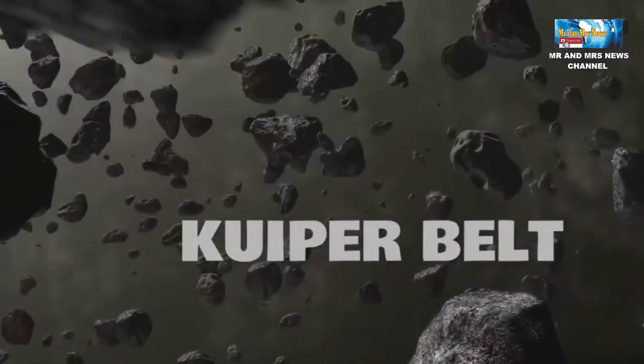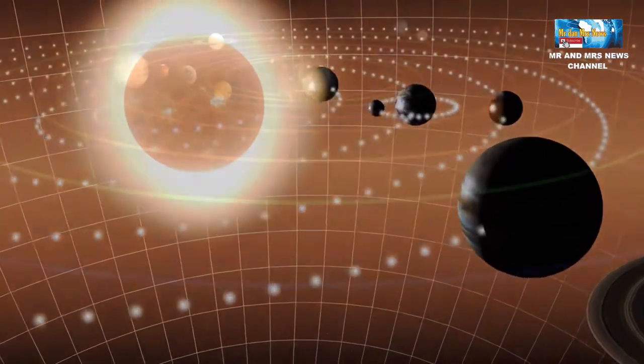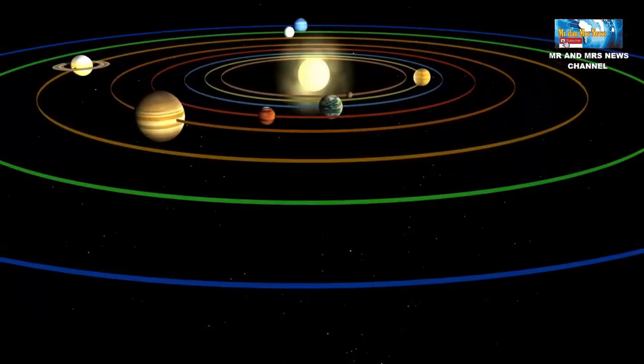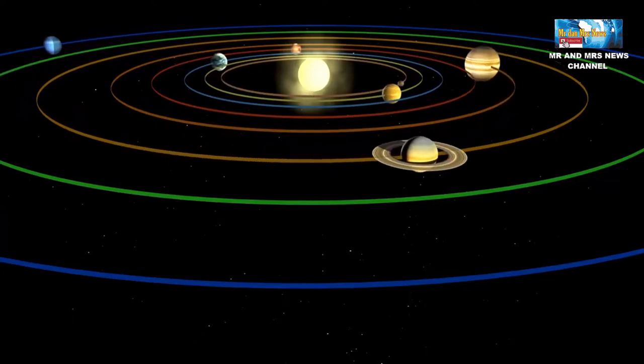Selain planet-planet yang mengitari matahari, terdapat benda-benda lain yang ikut tertangkap oleh gaya gravitasi matahari. Di ujung tata surya, terdapat sebuah wilayah yang berisi lingkaran es.